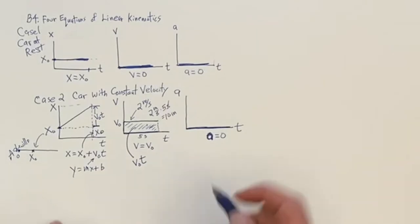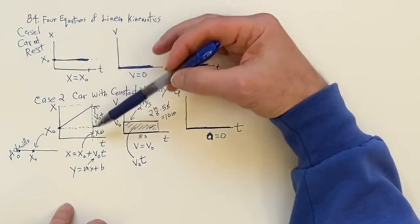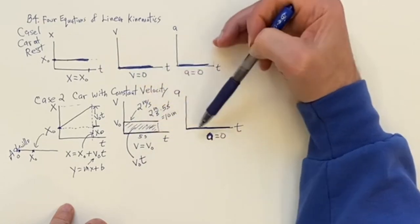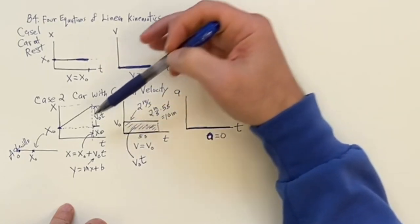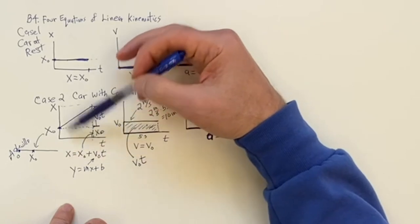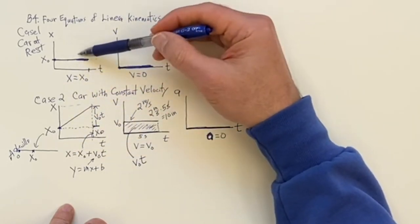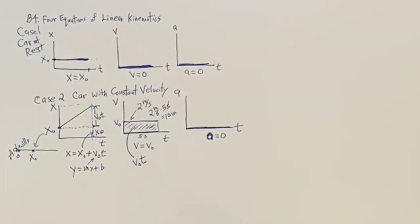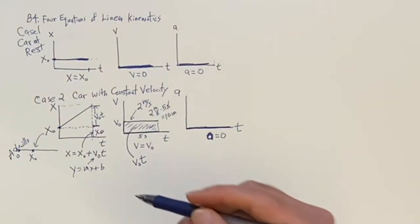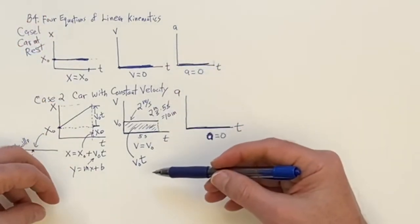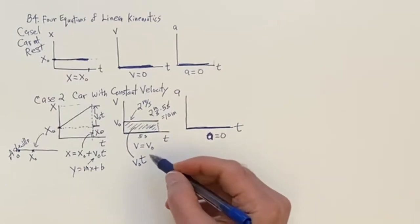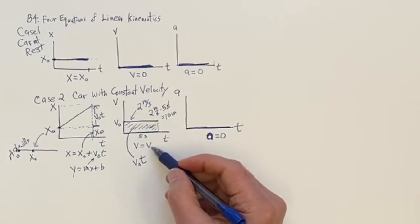A nice thing about these equations is that if the velocity should become zero, then V equals zero, A is still equal to zero, and X equals X-naught — we recover the earlier, simpler case. This is one of the things I love about physics: you can recover a simpler case from a more general formula when the parameters simplify, for example when V-naught becomes zero.